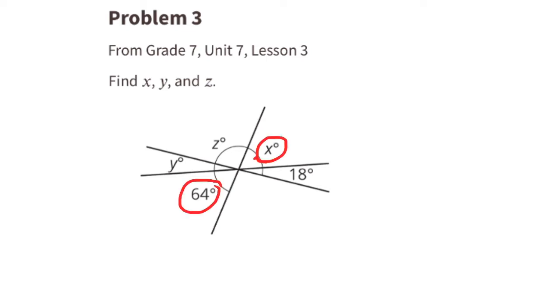These two angles are directly across from one another. They're called vertical angles, and vertical angles have the same angle measure. That means that angle X is 64 degrees. These two angles are also vertical angles, so angle Y is 18 degrees.